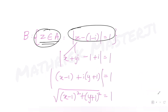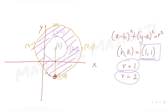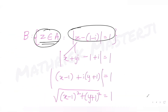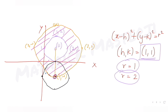Plotting this circle with center (1, -1) and radius 1, we draw it on the same diagram. The question asks for points satisfying both conditions: z belongs to A and lies on this circle. Since the equation equals 1, points must be on this circle. Checking against set A, many common points exist, giving us a large number of elements in set B.